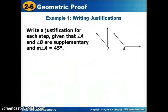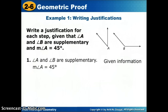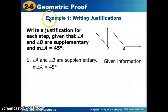Our first example: write a justification for each step given that angles A and B are supplementary, and that angle A is 45 degrees. I always start with the given information. So, A and B are supplementary and the measure of angle A is 45 degrees — how do we know that? It was given to us in the problem, so our justification will be 'given.'